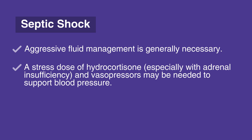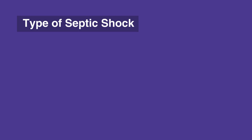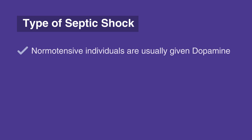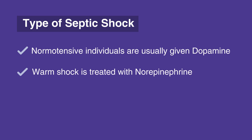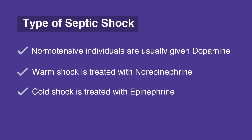After fluid resuscitation, vasopressors are given if needed and according to the type of septic shock. Normal, intensive individuals are usually given dopamine. Warm shock is treated with norepinephrine, and cold shock is treated with epinephrine. Transfusing packed red blood cells to bring hemoglobin above 10 grams per deciliter treats decreased oxygen-carrying capacity. As blood cultures return, focus antibiotic therapy to the particular microbe and its resistance patterns.